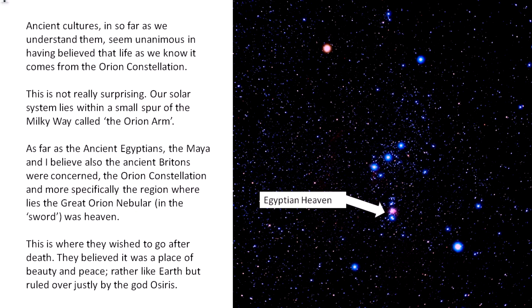The Orion Nebula is in the sword of Orion, which hangs down from his belt — the three bright stars Alnitak, Alnilam, and Mintaka. There is actually a bright nebula there: the nearest nebula to us. People with good eyesight can actually see it with the naked eye; you can certainly see it with a telescope. This is where the ancient peoples tell us mankind comes from — where heaven is.